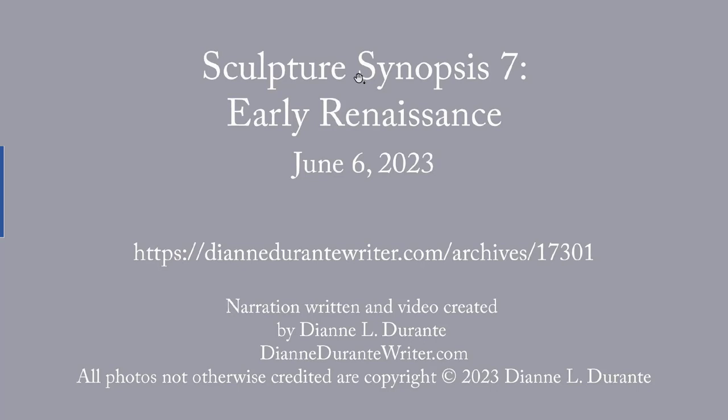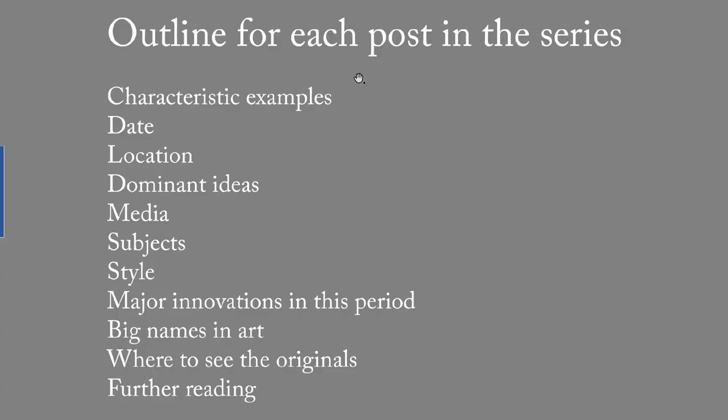This week's blog post is the seventh in my sculpture synopsis series. It's on the early Renaissance. For each post in this series we first look at a few characteristic examples, then the date, the location, the dominant ideas, media, subject, style, many major innovations that occurred in this period, big names in art, where to see the originals, and further reading.